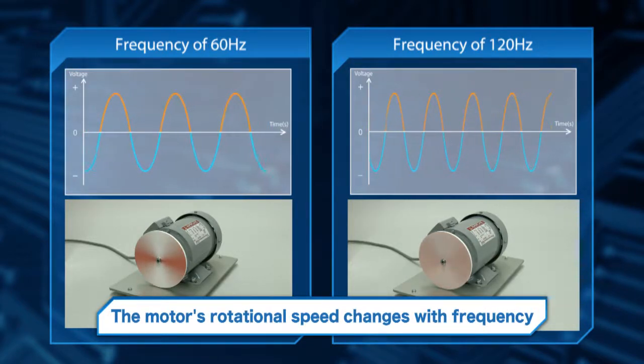An inverter is a device that controls the motor rotational speed by changing the frequency.